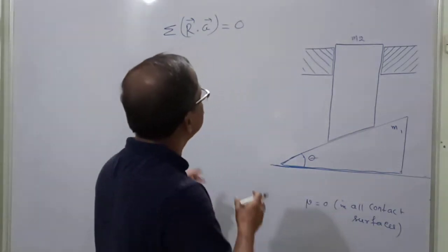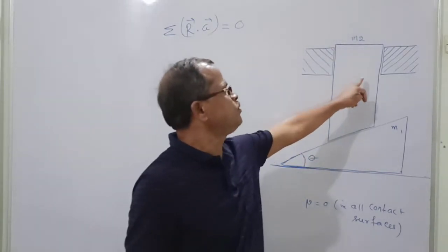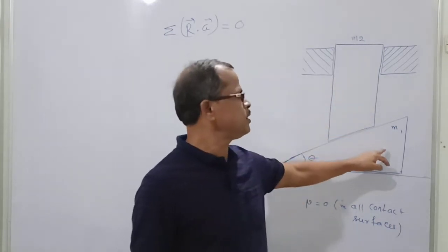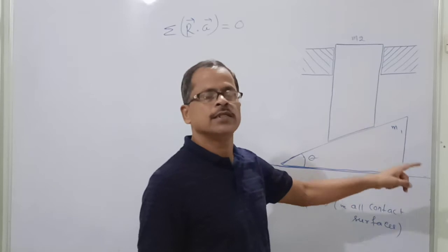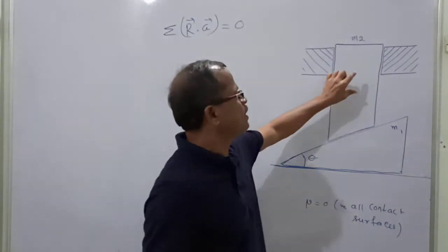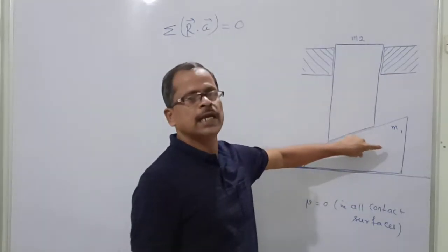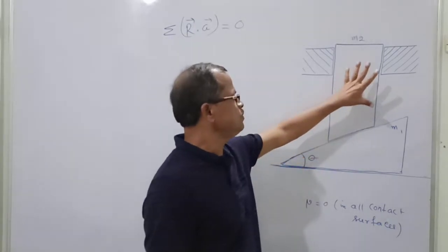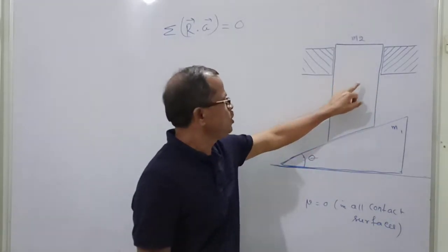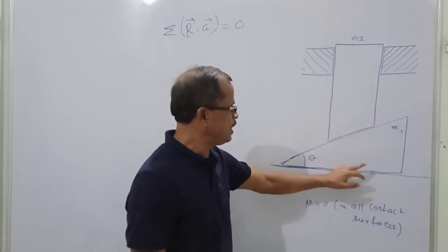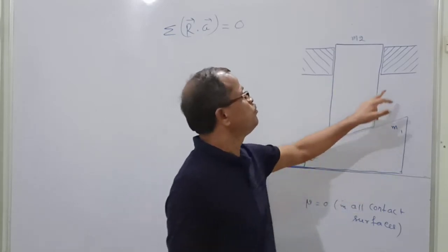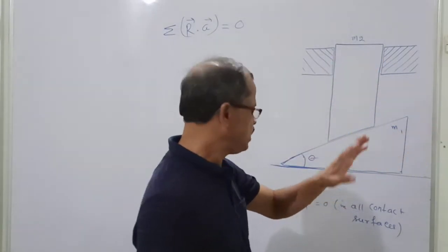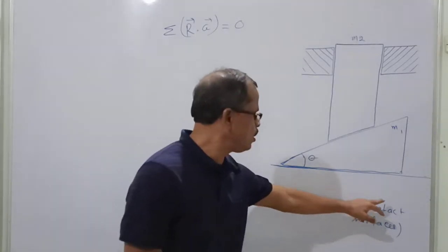To develop the constraint equation, five constraint equations are required. When I apply Newton's law to this body, I get one equation. When I apply Newton's second law, I get a second equation. But here there are three unknowns: the acceleration of this body, the acceleration of the other body, and the reaction between the two bodies. All surfaces between the bodies are frictionless — mu is zero at all contact surfaces.